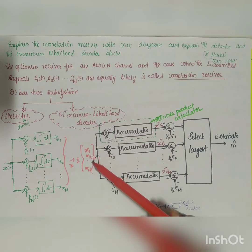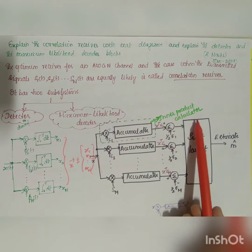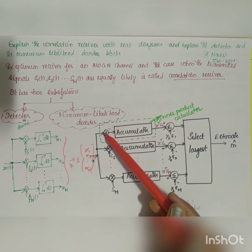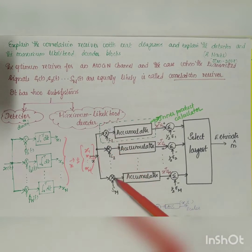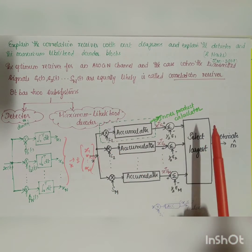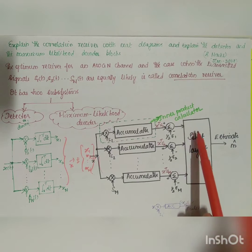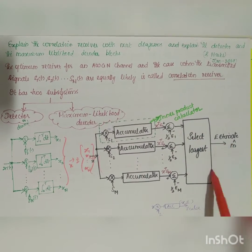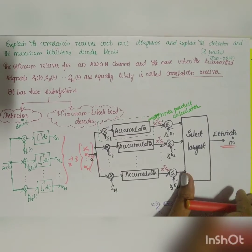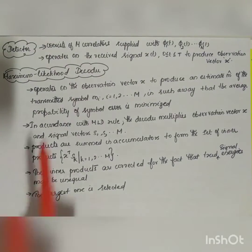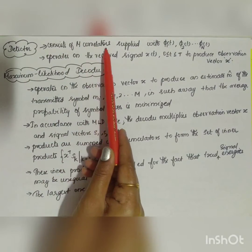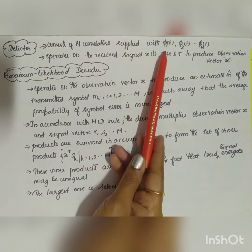In the maximum likelihood decoder, the observation vector x is given to an inner product calculator, which multiplies the observation vector x and the incoming signal vectors s1, s2, up to sm. These are given to a summation block, and the largest value among them is selected as the estimate m-cap.